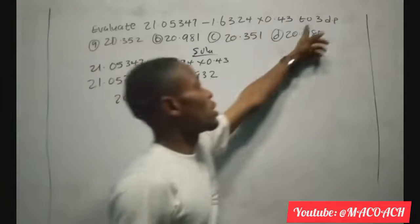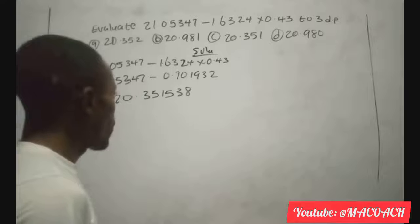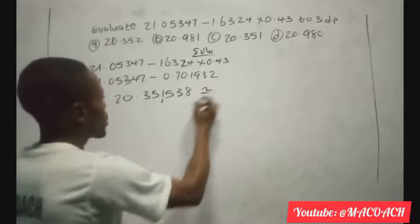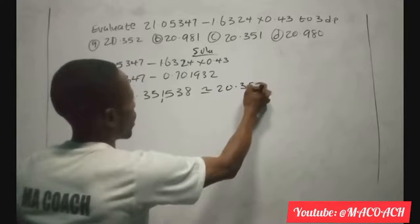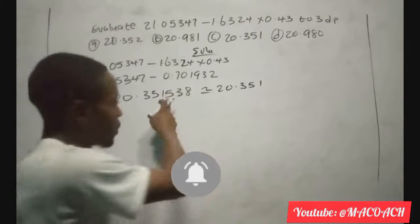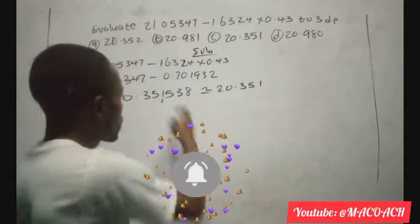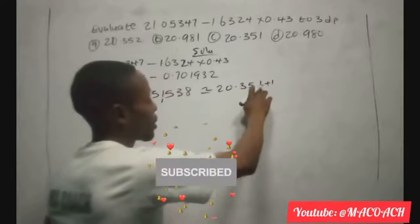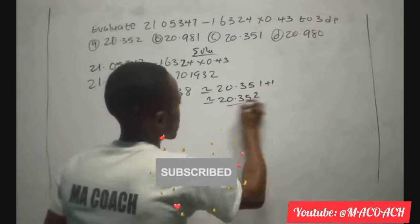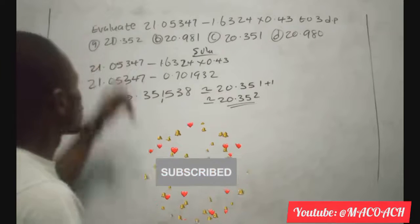We want to stop at 3 decimal places, so we look at the digits: 2, 0, 3, 5, 1. We stop at the third decimal place, which is 1. The next digit is 5, which is a rounding digit — 5 or more rounds up, so we add 1 to the 1, giving 2. Therefore our answer rounded to 3 decimal places is 20.352. Looking at our options, the answer is option A.